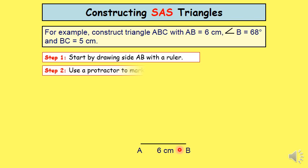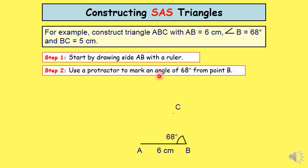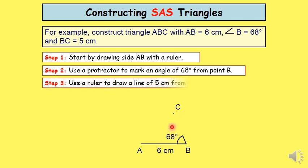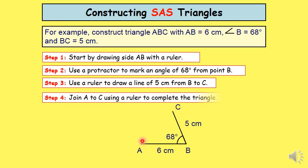Step 2, we use a protractor to mark an angle of 68 degrees from the point B. We set side angle. Step 3, we draw the third side which measures 5 cm. The last step, we join A and C to get the triangle.